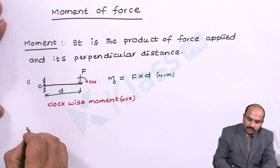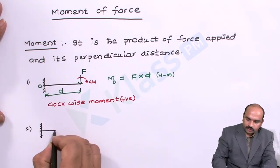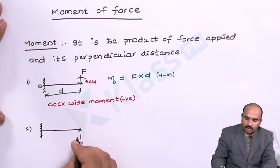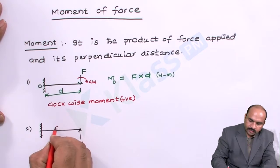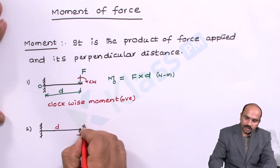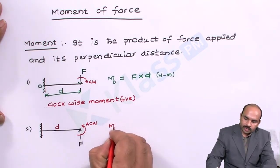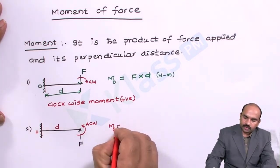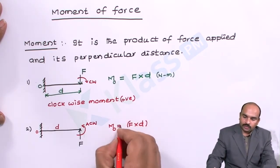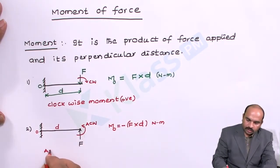The second type of moment is anticlockwise moment. Let a force F be applied in the upward direction with perpendicular distance D. Then the body will move in the upward direction and it creates an anticlockwise or counterclockwise moment. The moment with respect to O equals force into perpendicular distance D, and anticlockwise moment we will take as negative. The units are the same: Newton meter.